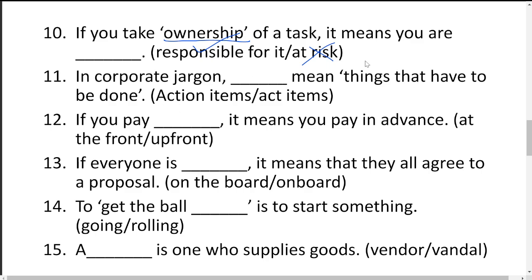In corporate jargon, blank means things that have to be done. Jargon is language used only in one particular place — for example, corporate companies have certain vocabulary called jargon, and medical students have their own set of jargon not used in any other sector. In corporate jargon, things that have to be done are called action items.